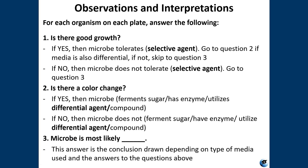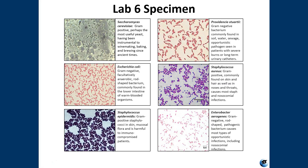If there is a color change then that means the organism ferments the sugar in that media. For example, if you have good growth on MSA and the media has changed from bright pink to yellow, then you could say that this microbe is most likely a gram-positive cocci that is halotolerant and ferments mannitol. That is what you'll need to do in your lab report for all species on all media. I've also described which organisms are yeast and which are bacteria, and provided the gram-negative or gram-positive determination for all species. It will be up to you to determine which species ferments the sugars we're looking at — for example, does E. coli ferment mannitol, or does Staphylococcus aureus ferment lactose?